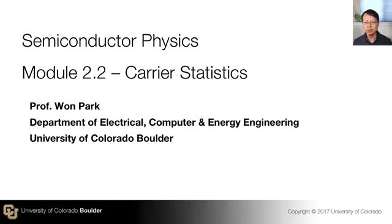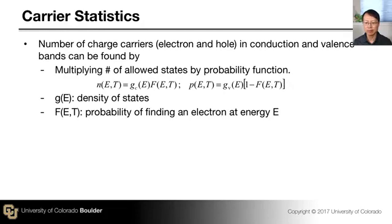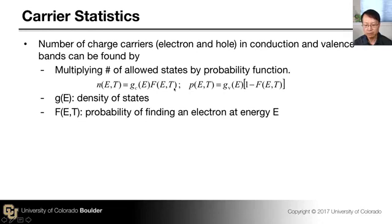In this video, we will calculate the equilibrium carrier concentrations. The number of charge carriers — electrons in the conduction band and holes in the valence band — can be found by multiplying the total number of allowed states by the probability function. N here is the density of electrons, or concentration of electrons, in the conduction band as a function of energy and temperature, given by the density of states of the conduction band times the probability of finding an electron at energy E at a given temperature T.